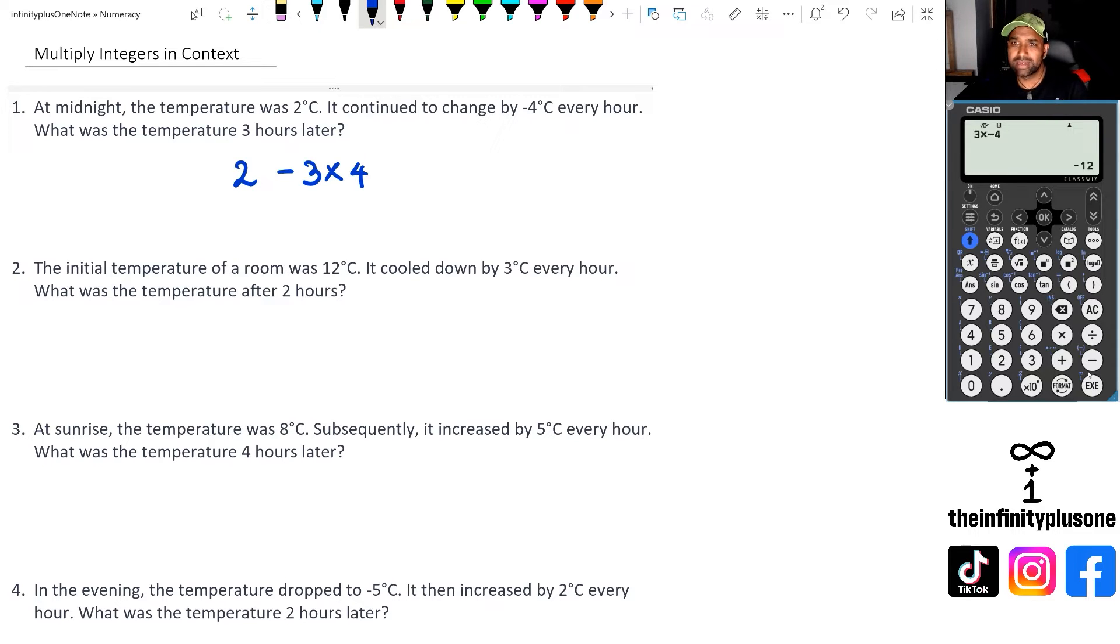I guess in the first one when I did negative three times four, I'm saying the temperature is decreasing by four after three hours. In this one, I'm saying three times negative four, which is going to be negative 12.